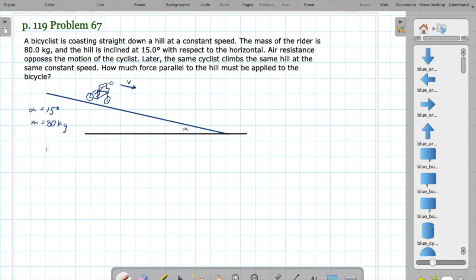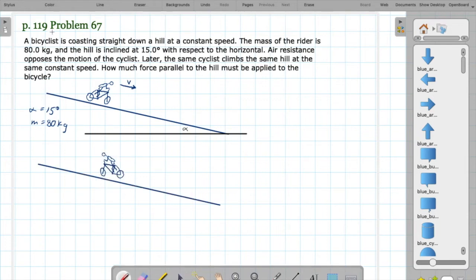This might not look like a statics problem, but it is a statics problem because the cyclist is not accelerating. In this first case, the cyclist is going down the hill, but then later the cyclist will go up the hill with the same velocity. What we need to find is the force that needs to be applied to the cyclist to go uphill at the same speed that the cyclist was going downhill initially.